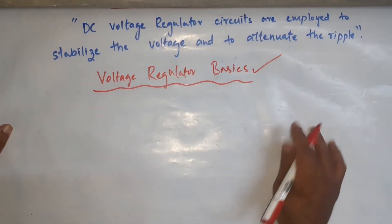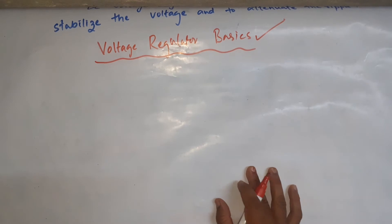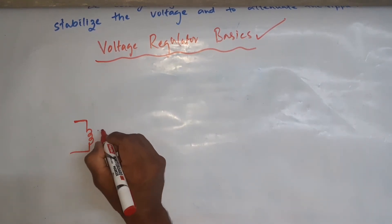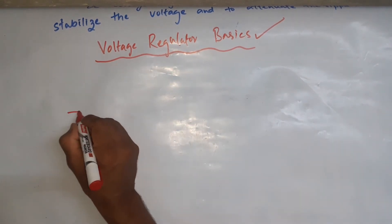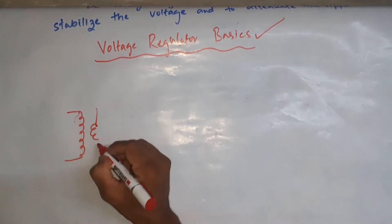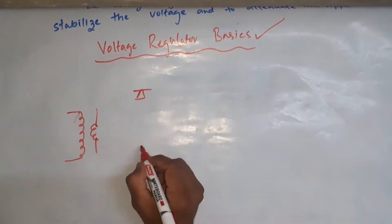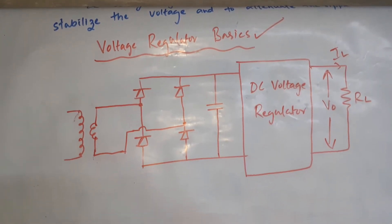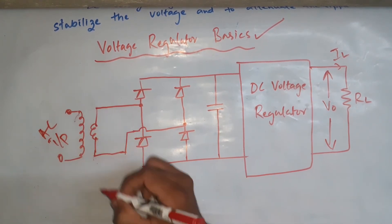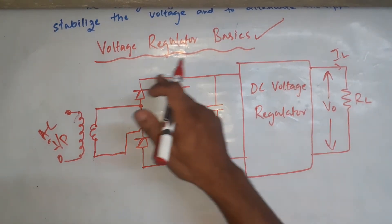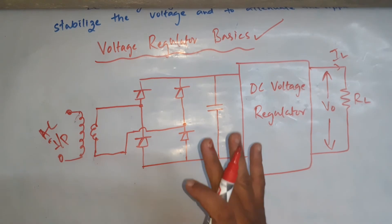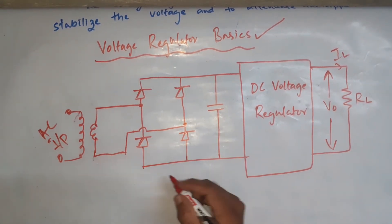Let me draw one basic voltage regulator in its most basic form, as per your syllabus. Under basics, you will have a very basic voltage regulator where I will be describing one rectifier. Here you will have your AC input from your transformer, and this is your bridge rectifier, followed by diodes and a capacitor — you already have good knowledge of this rectifier circuit.